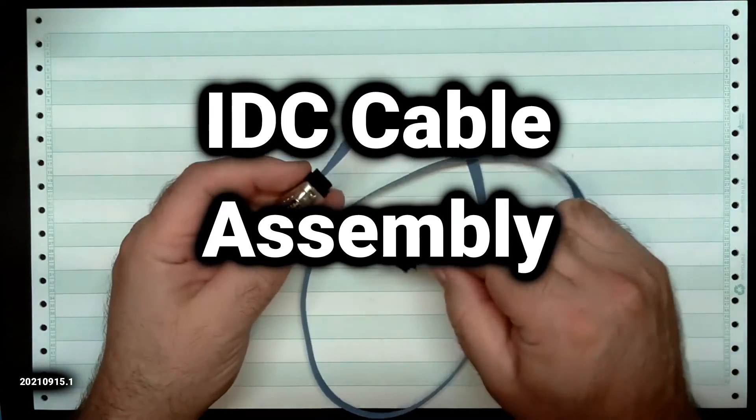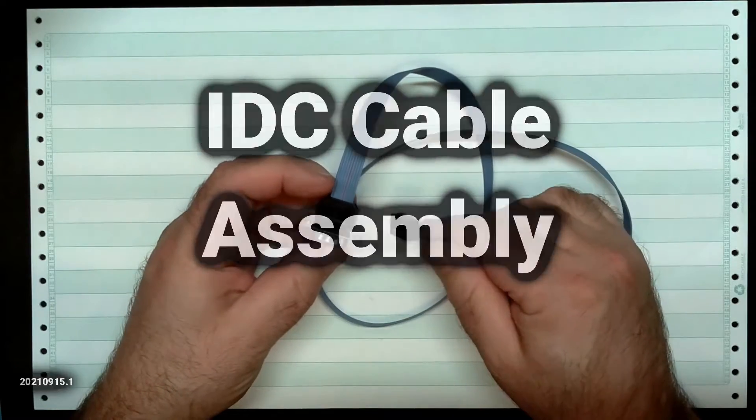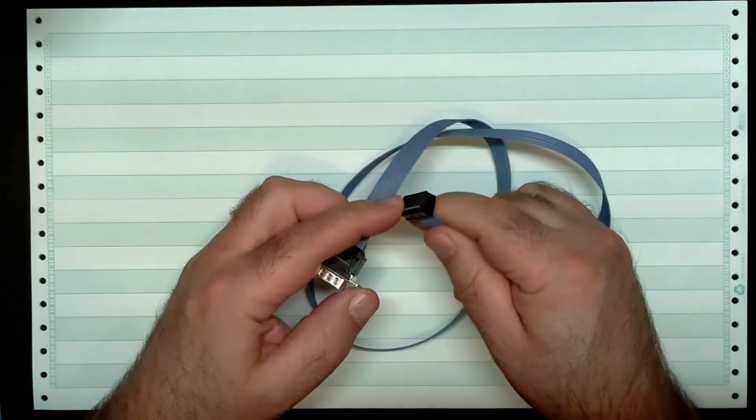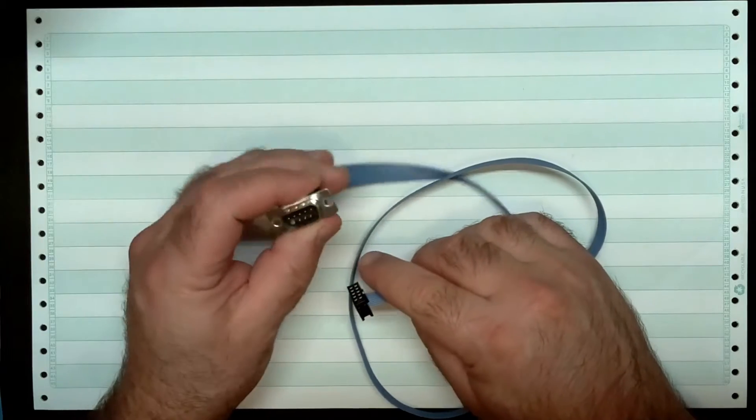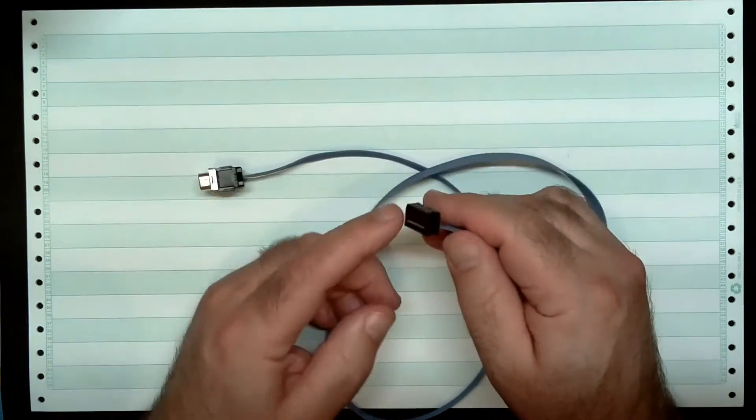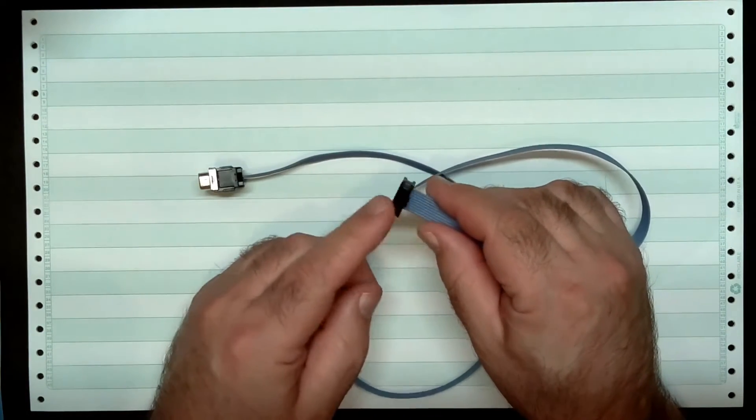I'm going to show you how to make a cable using an insulation displacement connector on one end and the other end. This is a DB9, right? And this is just a 2x5 header over here.